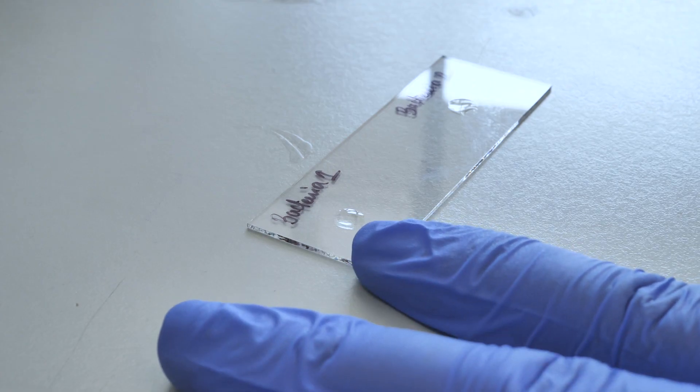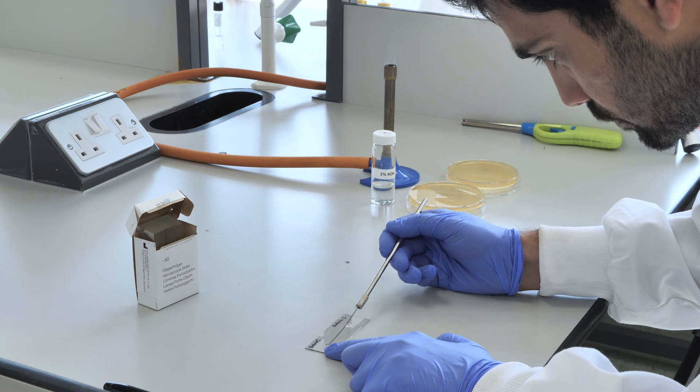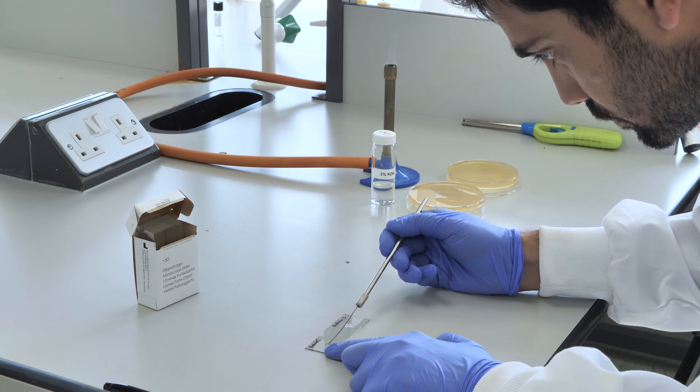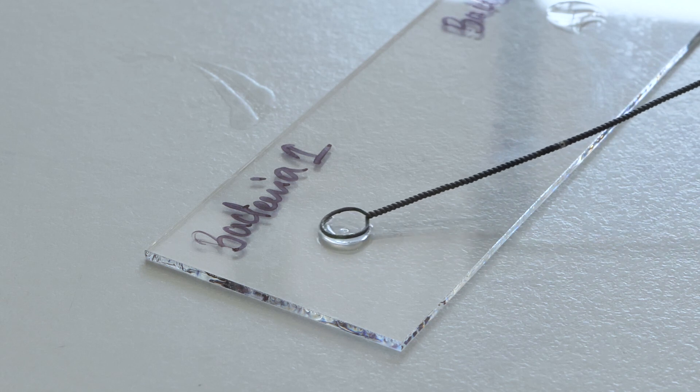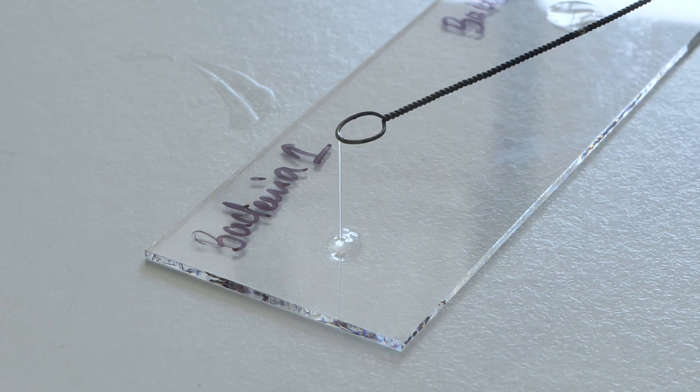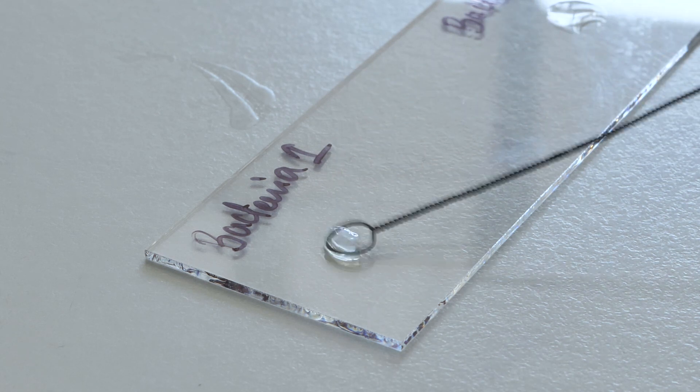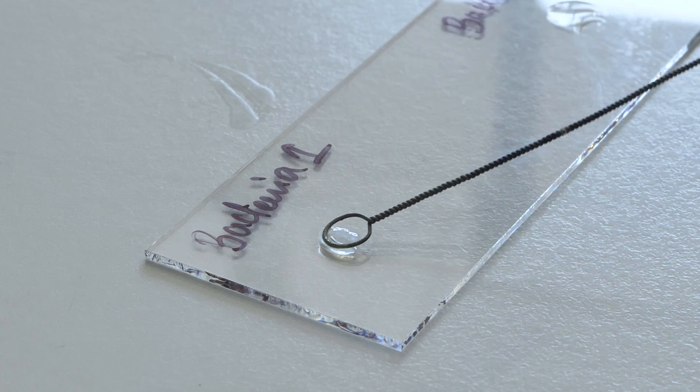A positive KOH test will be indicated if the solution becomes sticky and stringy when you slowly lift the loop up and down on the slide. This result is indicative of a gram-negative bacterium.